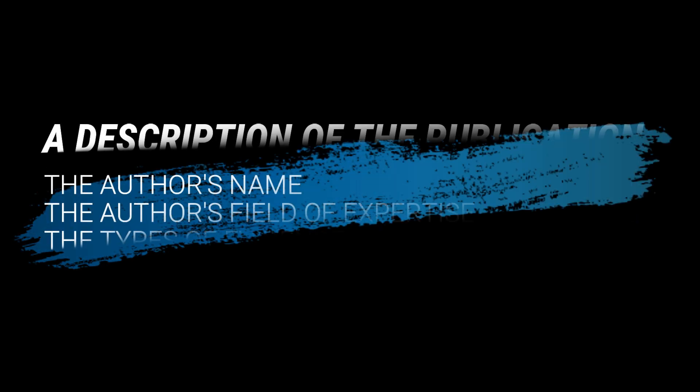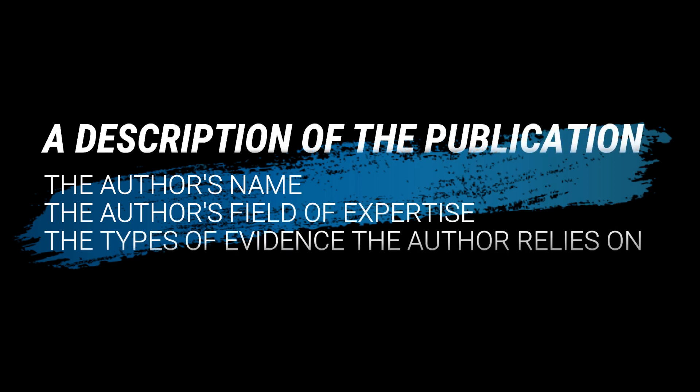The first component is a description of the publication. It refers to the author's name — of course, you need the author's name for proper citation of source. Be knowledgeable too of his field of expertise, as it has something to do with the ideas he imparted. Moreover, be aware of the author's types of evidence used in giving arguments about the research topic, such as whether it is a case study, narrative, statistics, or primary sources, and the reliability of these evidences.